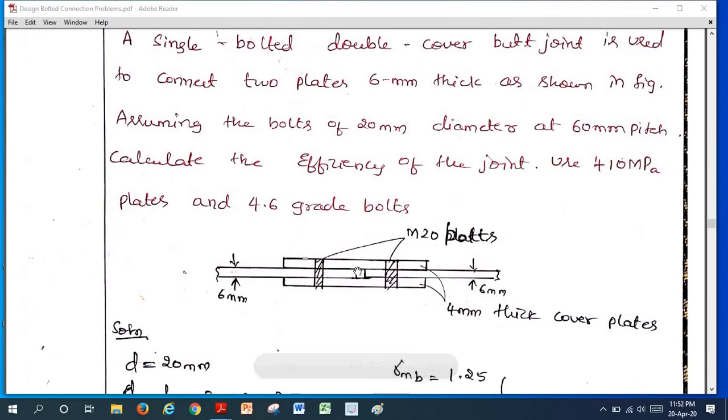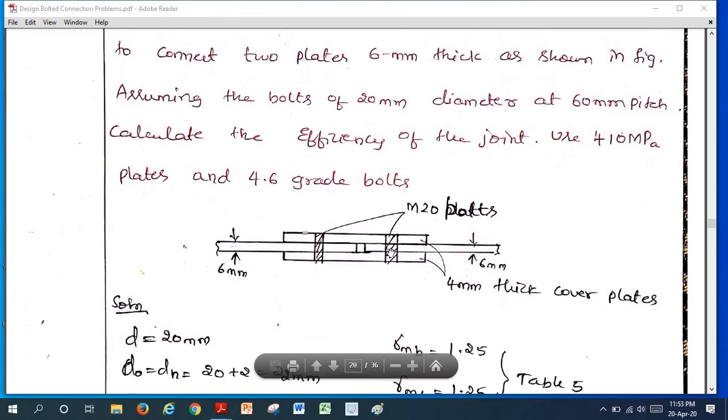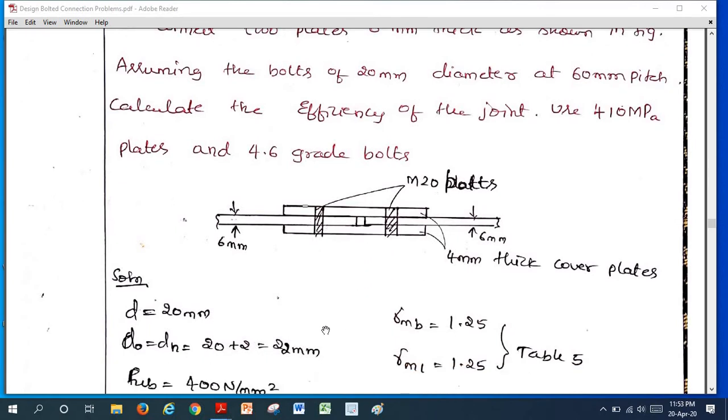Here this is the figure. This is called as double cover butt joint. These two are the cover plates. The thickness of the cover plate here is 4 mm thick. These two are main plates 6 mm thick. In case of butt joint, we need to connect the plates by placing them adjacent to each other. Above that, we put the cover plates. Sometimes it will be single cover, sometimes double cover. Whereas in case of lap joint, we place the main plates one above the other. There is no question of cover plates in case of lap joint.